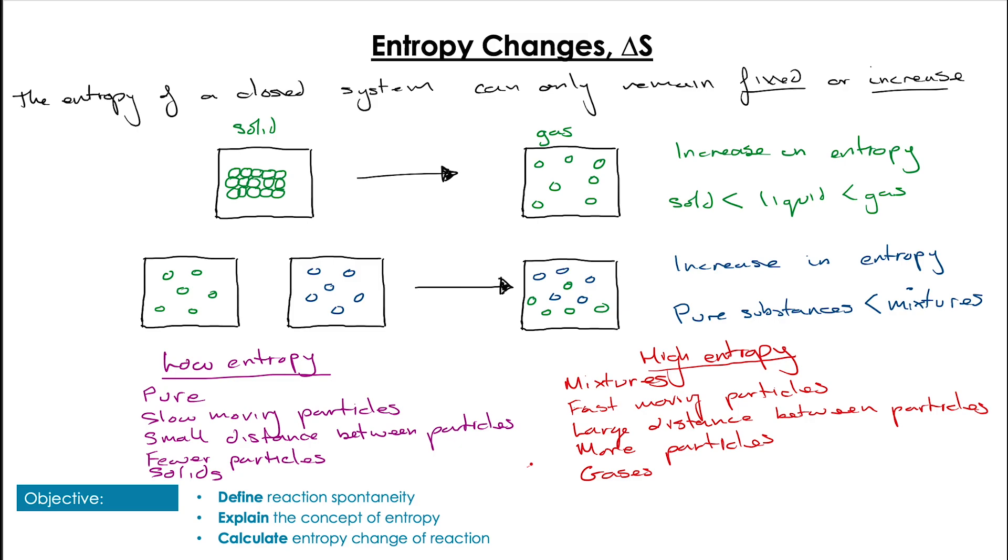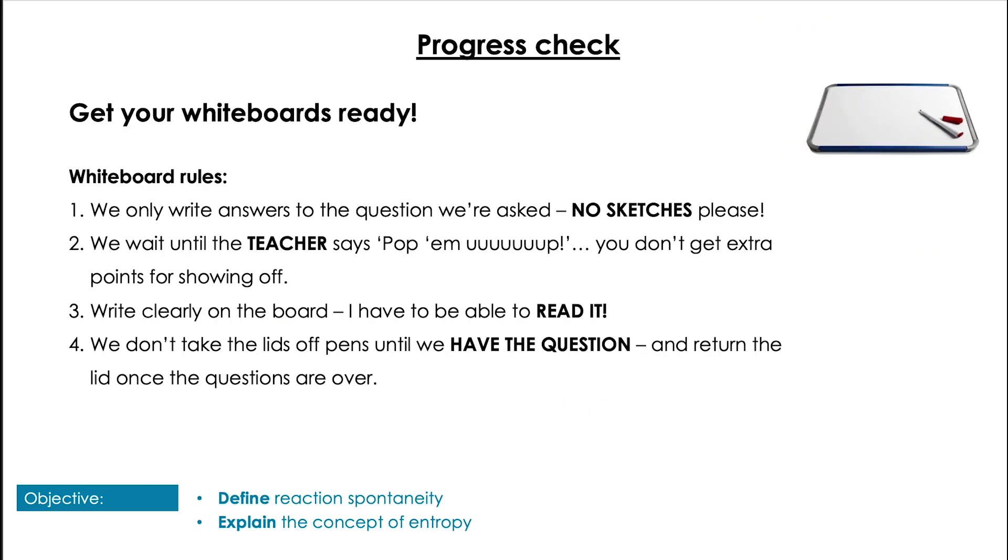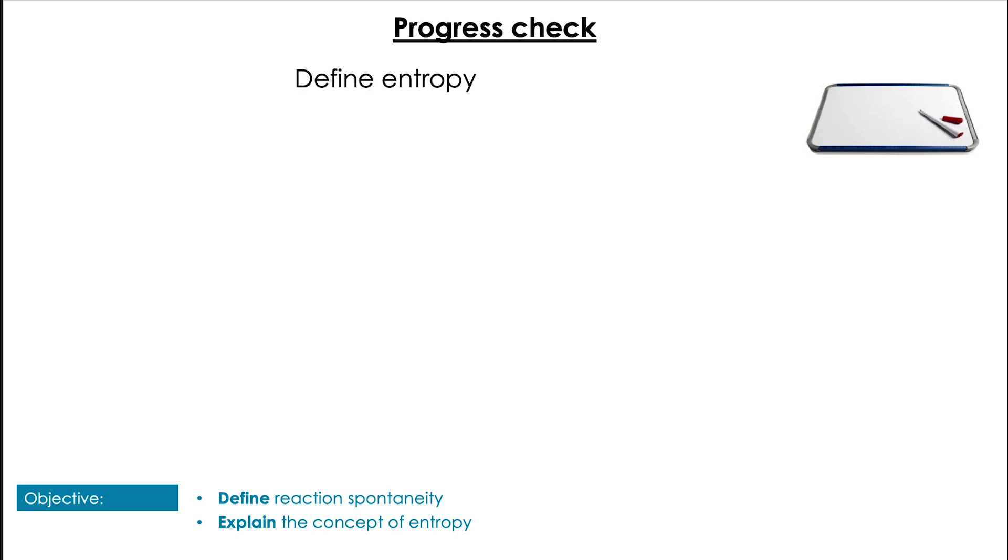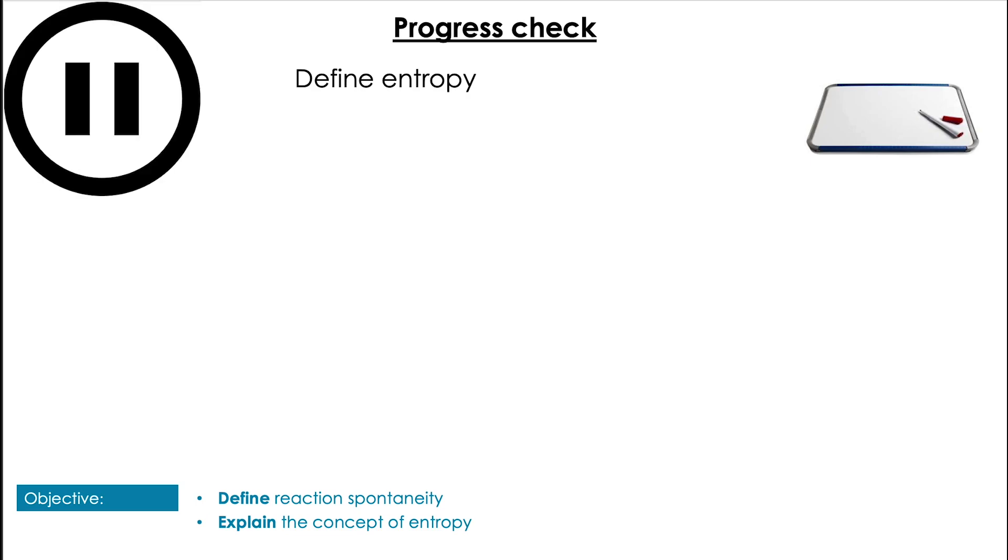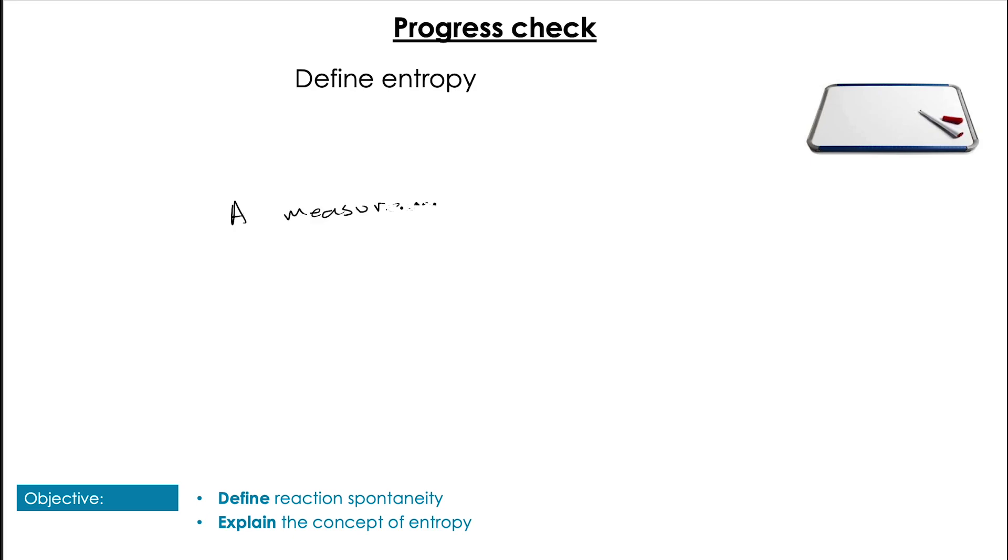The units for entropy are joules per kelvin per mole. A couple of quick questions then before we look at calculating this. First question: Define entropy. Pause the video. Pop them up. So you could have defined entropy as a measurement of disorder or a measurement of energy spread.